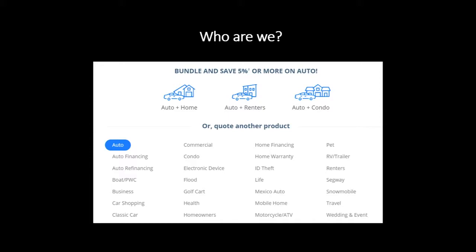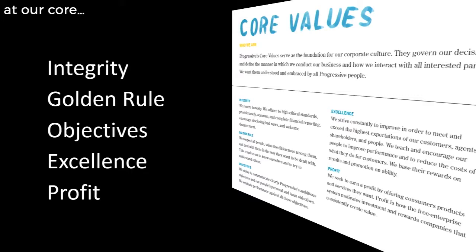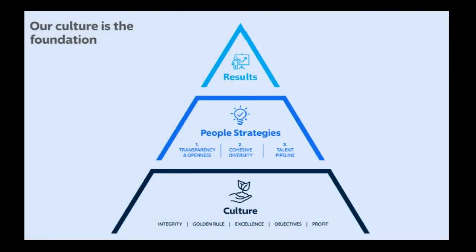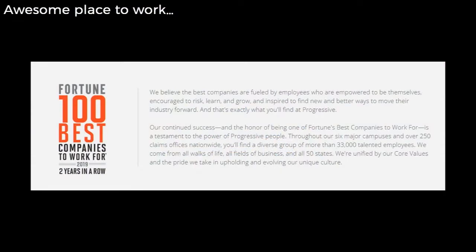Data is sort of core to what we do — air, water, data. If you took a vacuum cleaner and removed all the data out of Progressive, we may not have many things to work on. One thing that brings us together is our core values: integrity, golden rule, objectives, excellence, and profit. Culture is really core. We just had our Gallup survey, which goes to all 40,000 employees. We look at scores, comments, things people like and want to change. We've gotten some awards recently and it's a great place to work.